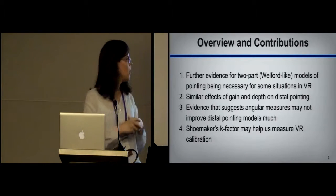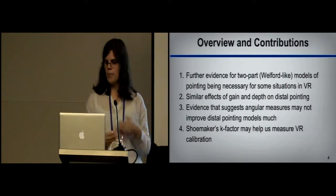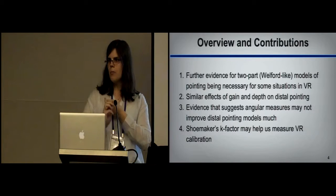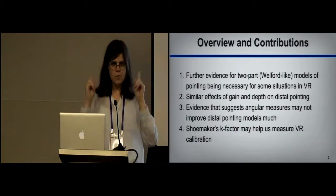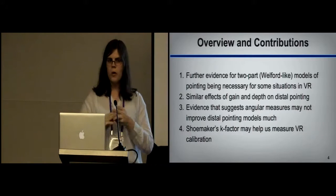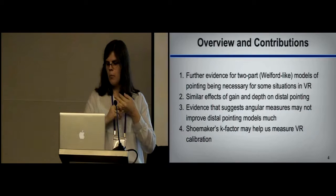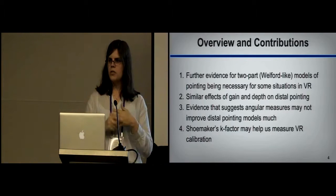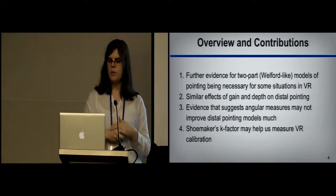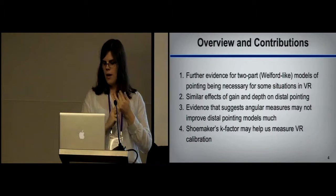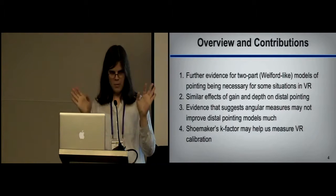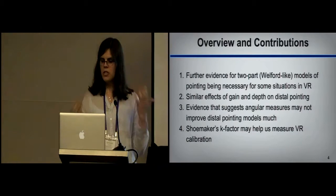That being said, we're reporting these main contributions in our paper. We provide further evidence that two-part models of pointing performance are necessary in some situations. We note that the effect of gain and depth are very similar on distal pointing. We provide some evidence to suggest that angular measures of target difficulty are not improving distal pointing models much. And Schumacher's K-factor, which we'll talk about later, may help us measure VR calibration.